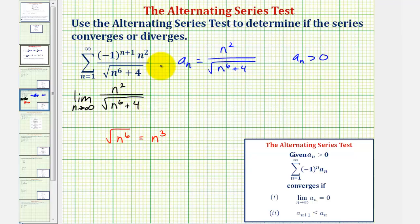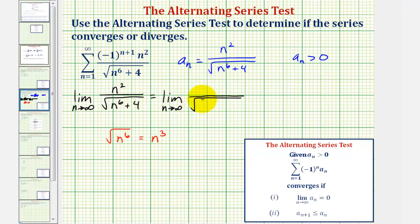If we do want to show some work, we would divide the numerator and denominator by the highest power of n in the denominator, which would be n to the sixth underneath the square root. Looking at the denominator, we can write this as the square root of n to the sixth divided by n to the sixth, plus four divided by n to the sixth. Because the n to the sixth is under the square root, it's equal to n to the third outside the square root. So we divide the numerator by n to the third.